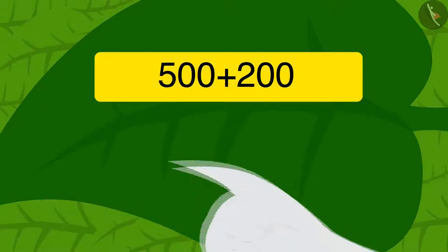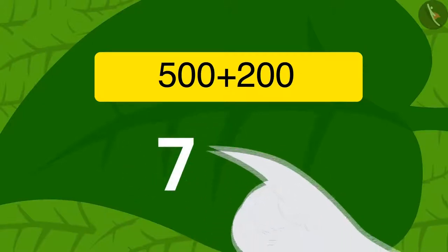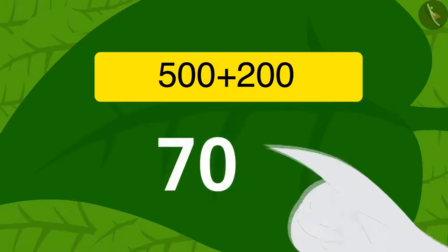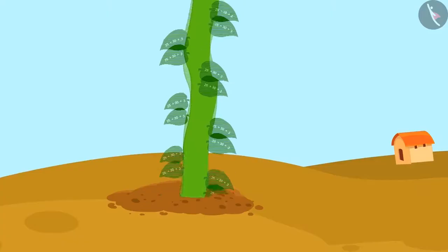Like what Meenu did, Uncle too wrote the answer to the riddle, 700, on the vine leaf with his finger. And then again, the vine sunk into the ground and got shorter.